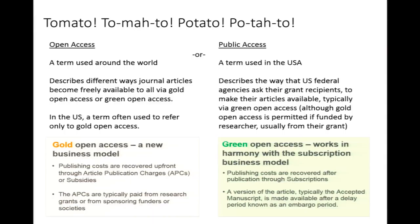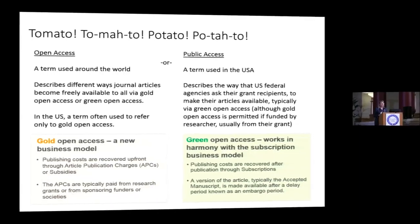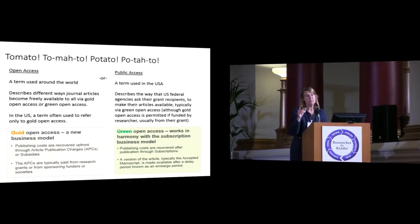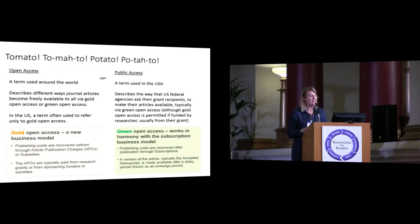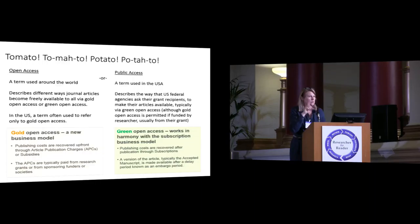But in the U.S. particularly, when people talk about open access, they're often talking only about the gold open access model. Public access is a term that's become better known — it can sometimes be synonymous with green open access, but it's a little bit broader. It's an approach to ensuring that U.S. federal agency grant recipients can comply with mandates. They're generally free to use their research grants for gold open access publishing fees, but they're encouraged and required to comply through a green open access approach. So just keep your ear out for those terms — open access, public access — and if you hear open access, think: are we talking gold or green or both?